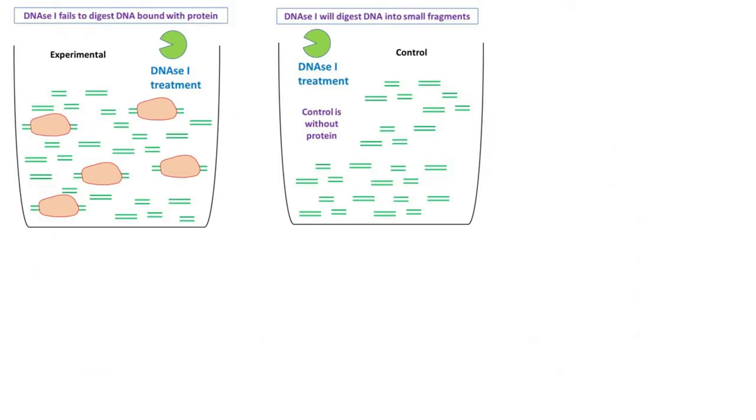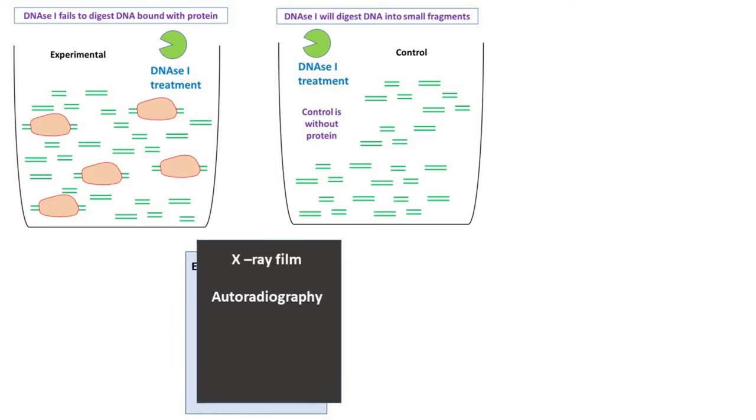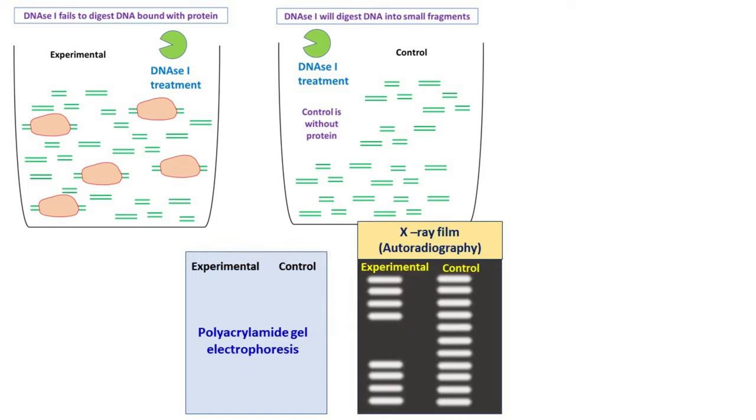Now the DNA fragments are analysed by polyacrylamide gel electrophoresis. Since the DNA fragments are labelled, we keep an X-ray film on the gel and perform autoradiography.